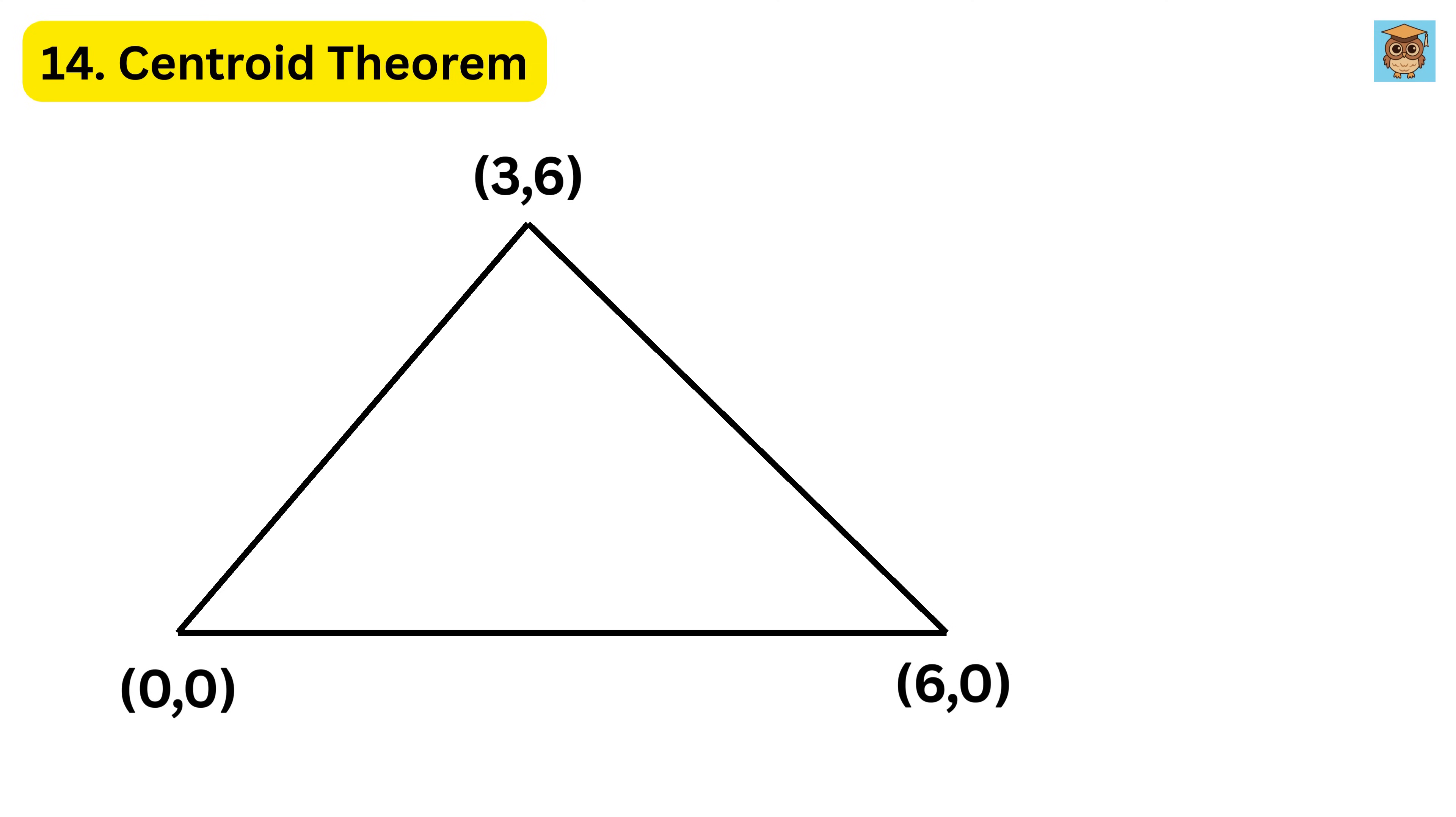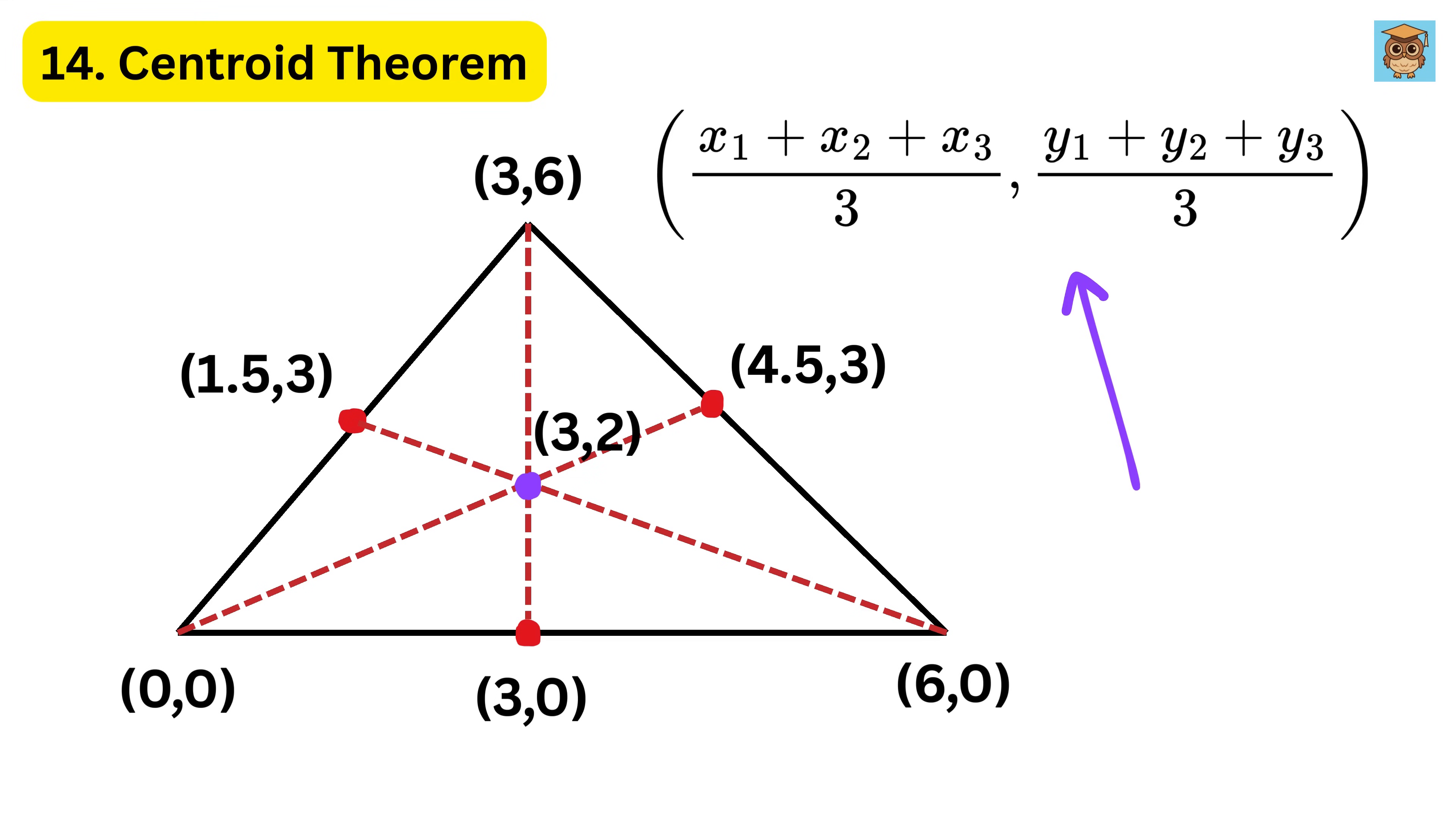Consider a triangle with vertices at zero comma zero, six comma zero, and three comma six. The midpoints of its sides are this will be three comma zero, this will be six plus three or nine over two or four point five comma six plus zero, divided by two or three, and similarly, this will be one point five comma three. If you draw medians from each vertex to the opposite midpoint, all three will meet at a single point, the centroid, which is located at three comma two. This is because the centroid is given by this formula, where x1, x2, and x3 are the x values of the corners of this triangle, and y1, y2, and y3 are the y values of the corners of this triangle. So, put it here to get the centroid as three comma two.